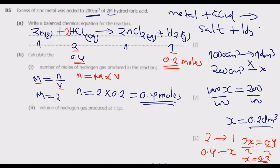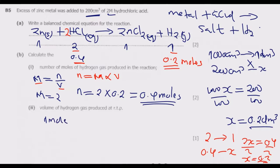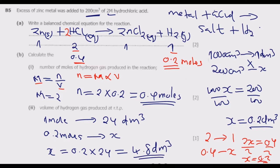Question C: Calculate the volume of hydrogen gas produced at room temperature and pressure. From the periodic table, the molar volume of any gas at RTP equals 24 dm³. We have 0.2 moles of hydrogen: using the ratio, 1 mole = 24 dm³, so 0.2 moles × 24 = 4.80 dm³.